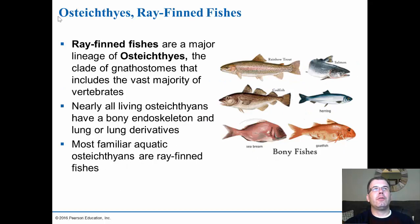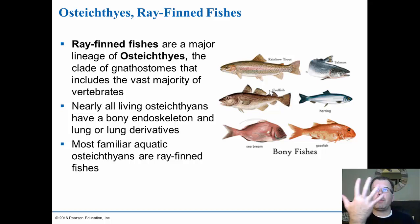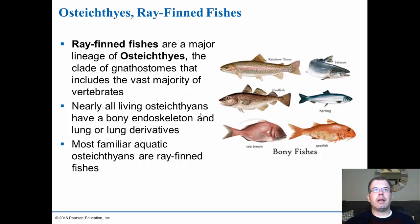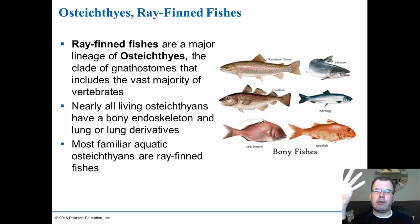The osteichthyes have a bony endoskeleton and lung derivatives. Most of these have gills but also have some remnants of a partial lung. Most aquatic osteichthyans are the ray-fin fishes — bony with rays and spines. The lobe fins, which are part of this group, have more of a bony lobe structure which actually allows them to come out of the water. These are the ancestors to the tetrapods because these lobes have a bone structure on the inside that allows them to get out of the water.